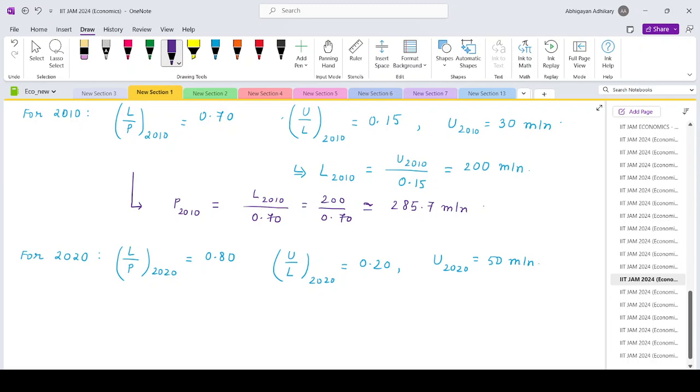So again, using the last two informations, the total workforce for 2020 is 50 divided by 0.2, that is 250 million.